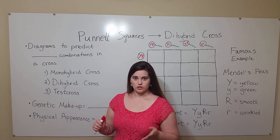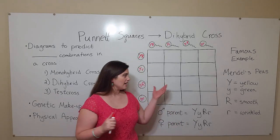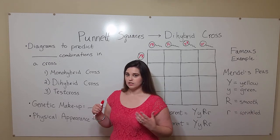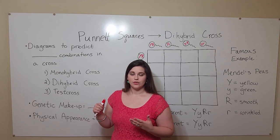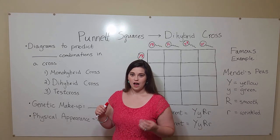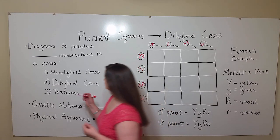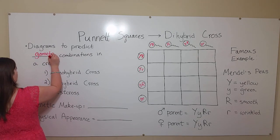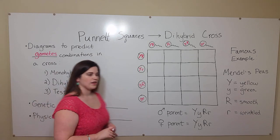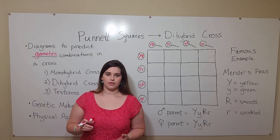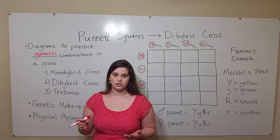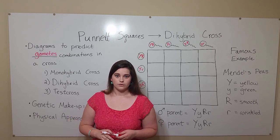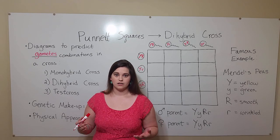Let's review what Punnett squares do. They are simply diagrams that show the possible combinations of gametes. Remember that gametes in humans are the sperm and the egg — the gamete from the mother and the gamete from the father that join in the process of fertilization to create offspring.